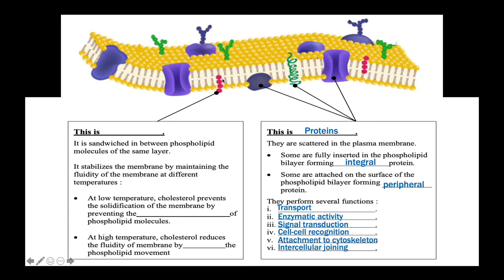The last component of the plasma membrane we will discuss is cholesterol. Cholesterol is a type of steroid, and as we learned in Chapter 1, steroids are made up of four fused rings. Cholesterol is sandwiched in between phospholipid molecules of the same layer. It stabilizes the membrane by maintaining the fluidity of the membrane at different temperatures. At low temperature, cholesterol prevents the solidification of the membrane by preventing the tight packing of phospholipid molecules.